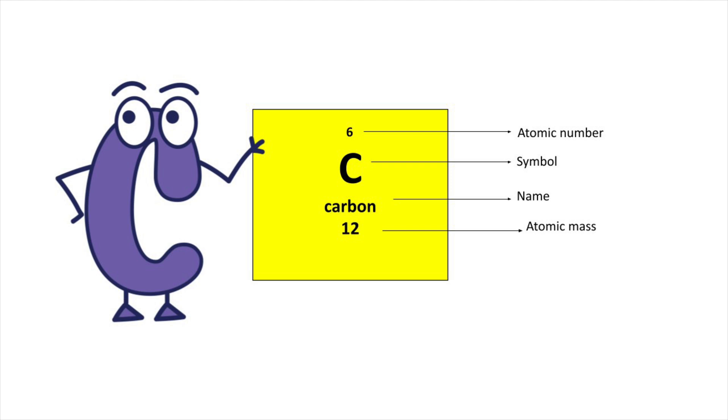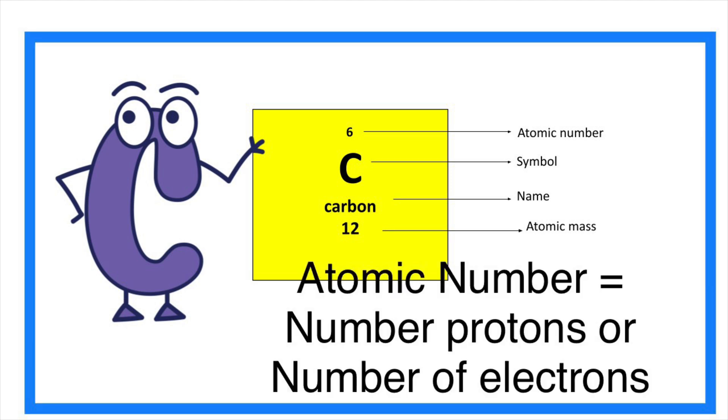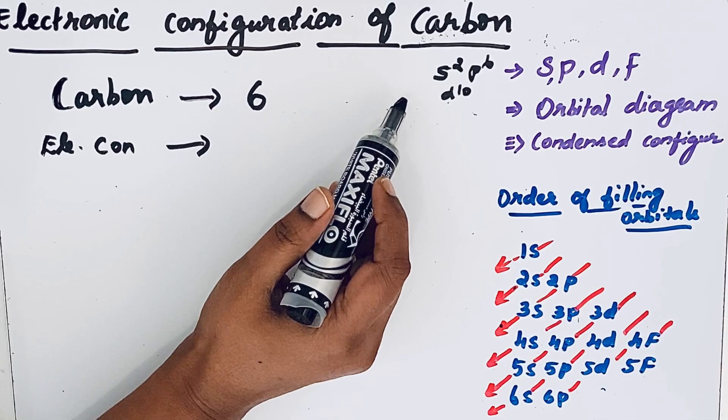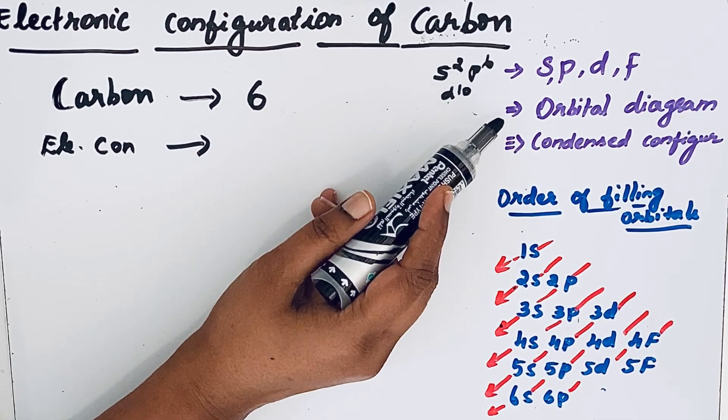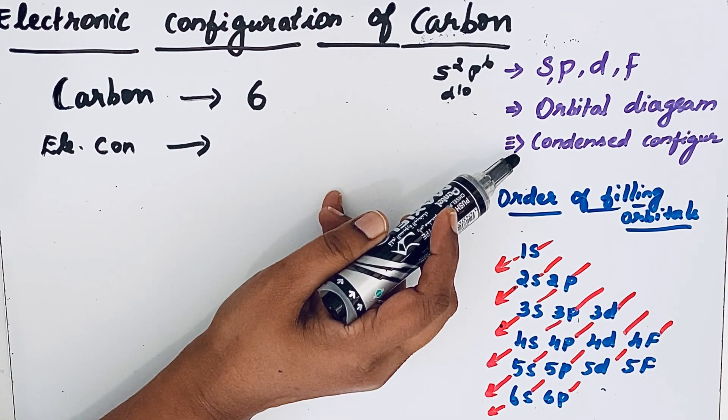Carbon atomic number is 6. Number of electrons in carbon atom is 6. Electronic configuration can be represented in three ways: SPDF notation, orbital diagram, and condensed configuration.